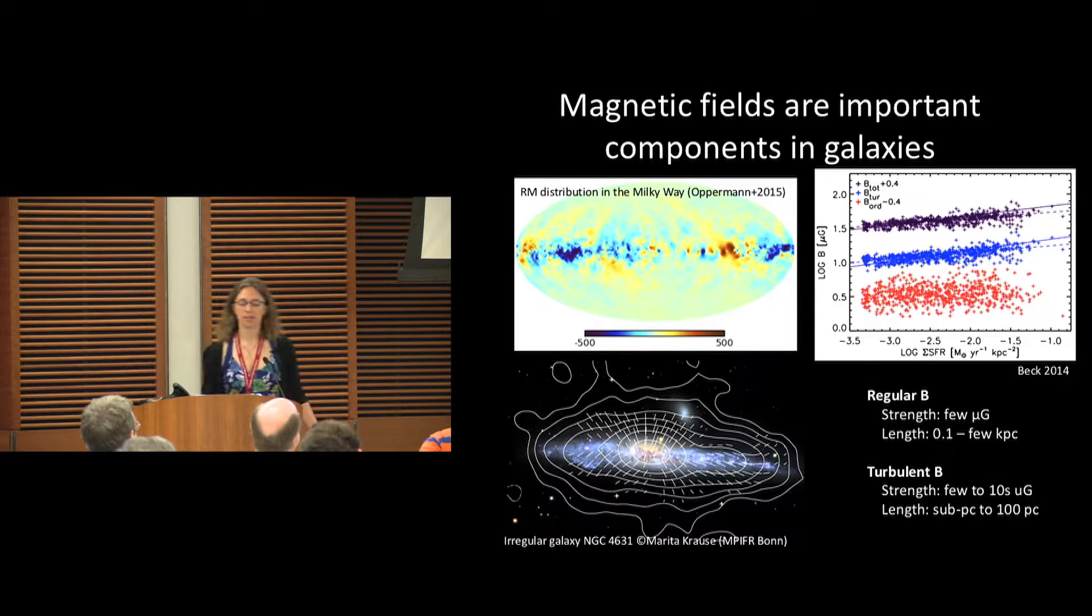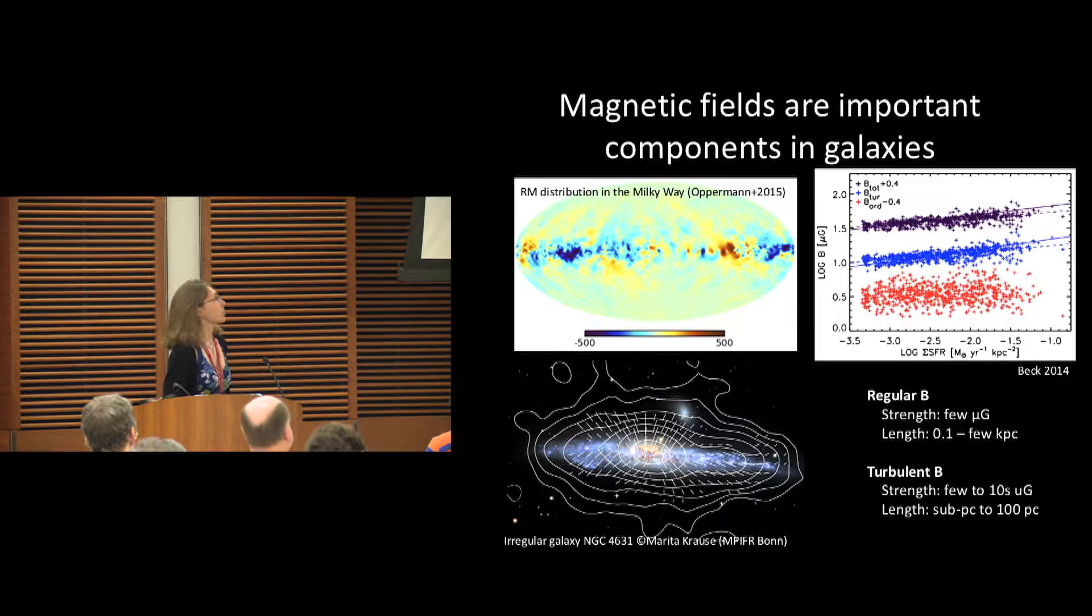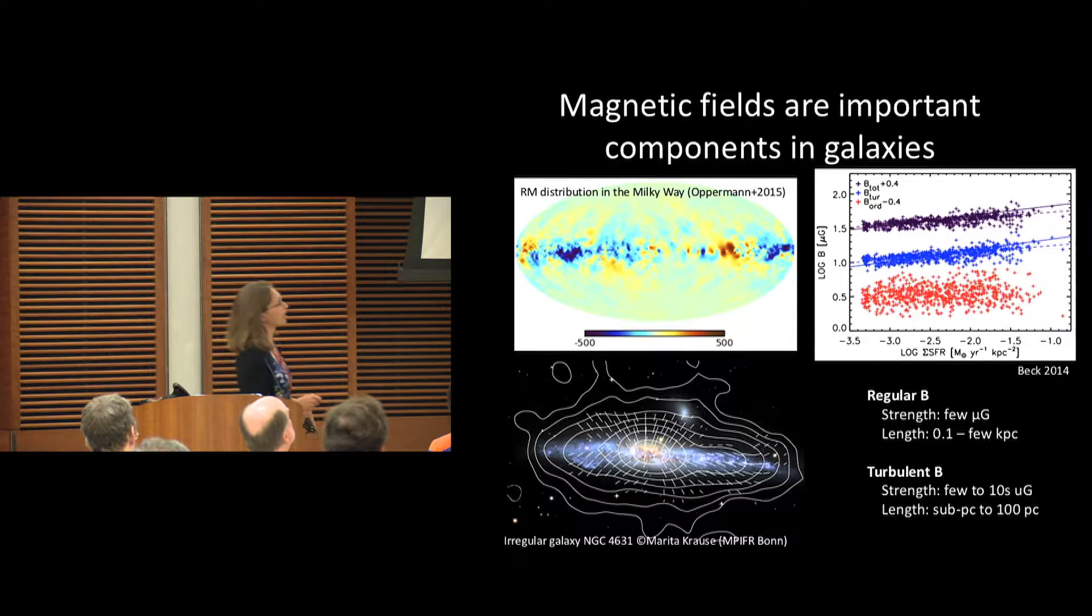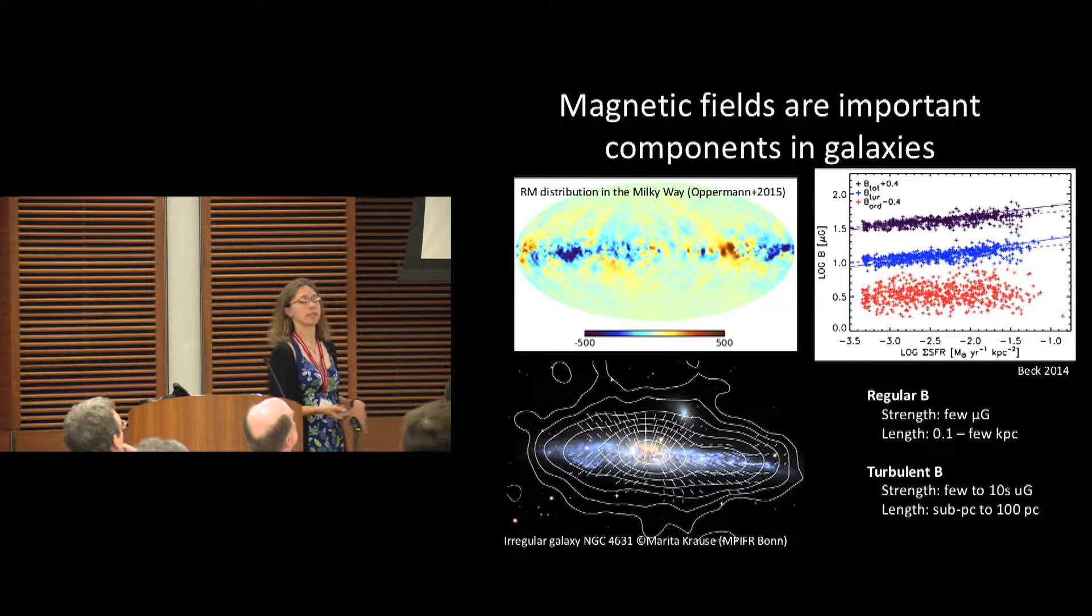Magnetic fields play important roles in the acceleration of cosmic rays, the energy balance, and the ISM, and it can also play a role and is related to star formation.